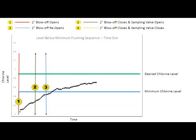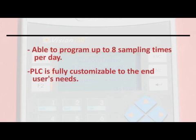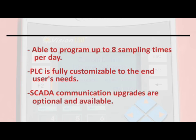Initial and final chlorine levels, time of day, and flush duration data is recorded onto the PLC and is available for download onto the microSD card. Eight sampling times per day are available. The PLC is fully customizable to the end user's needs, and SCADA communication upgrades are also available.